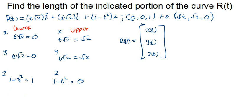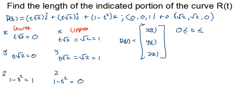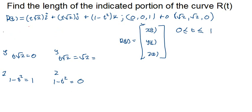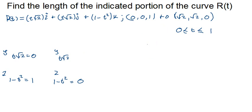So 0 ≤ t ≤ upper limit. For the upper limit, making t the subject of the formula: t√2 = √2 gives t = 1. Also 1 minus t squared = 0 gives t squared = 1, so t = 1. The upper limit is 1. That's the interval [0, 1] that we're going to use. It's very important that we know how to determine the interval when given the lower and upper limits in vector form.